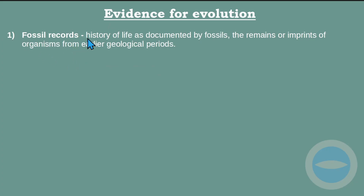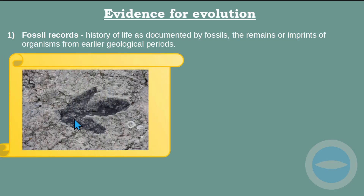Fossils represent the history of life as documented by fossils — they are the remains or imprints of organisms from earlier geological periods. We talk about the remains found now that are believed to have been alive many years ago. Here is an example of a fossil: there is a print in the rock, which shows that something big was alive at the time the rock solidified. Something stepped here, leaving a print — this is the evidence that something lived here. We cannot just say there was a dinosaur before without showing proof, so this is the proof.